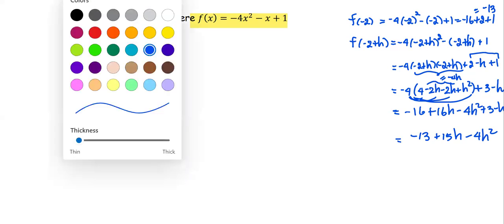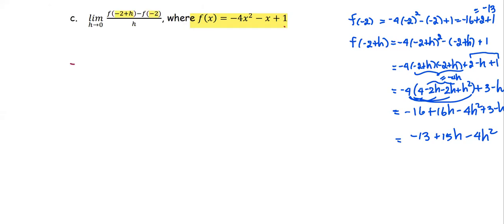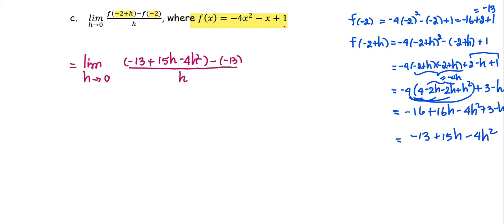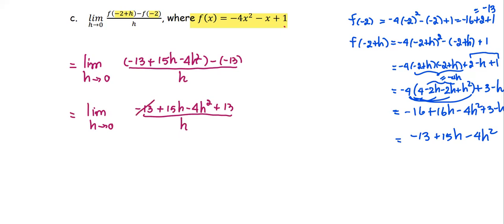Next, we go back to the main part of the problem. As h approaches 0, the function at negative 2 plus h is substituted by negative 13 plus 15h minus 4h squared. We can see that negative 13 and positive 13 cancel. The numerator simplifies to 15h minus 4h squared, all divided by h.